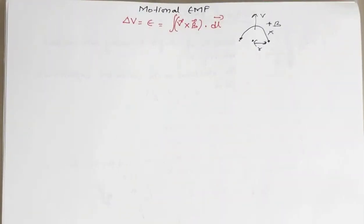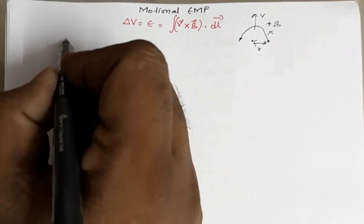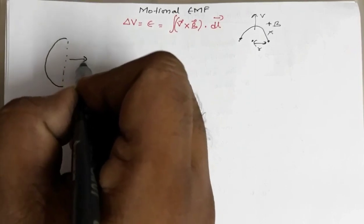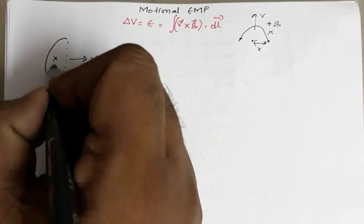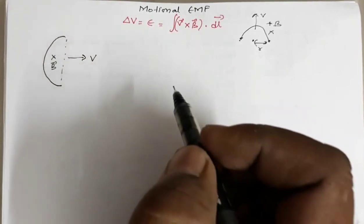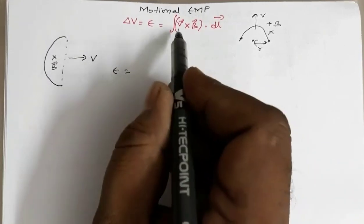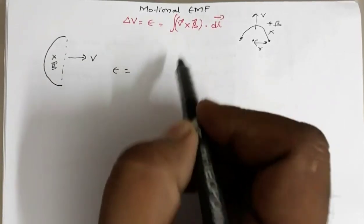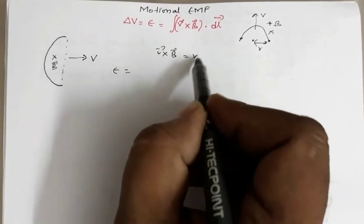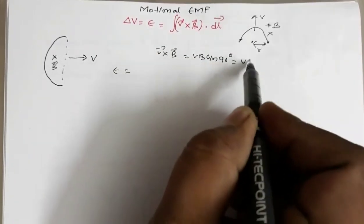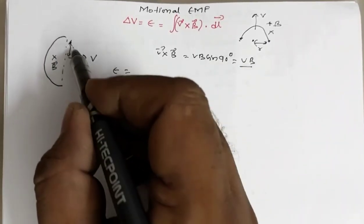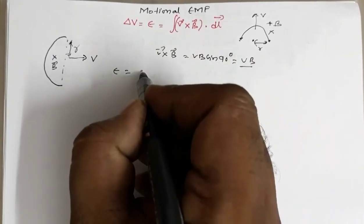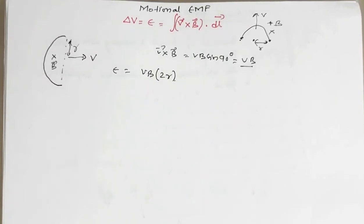Let us see how to solve this problem. In the first case, this is the semi-circular wire and it is moving in this direction with velocity V. The magnetic field is perpendicular to the plane in which the semi-circular wire is moving. The motion EMF — in this case V and B are perpendicular; V is in this plane directed in this direction, and B is perpendicular to the plane of the paper and directed inward. So V cross B is VB sin 90°, which equals VB. And since it is a semi-circular wire of radius R, the length is twice R. So the EMF will be VB into twice R.